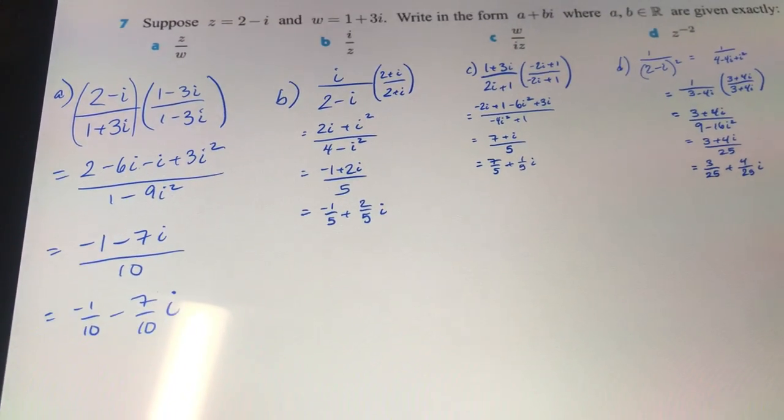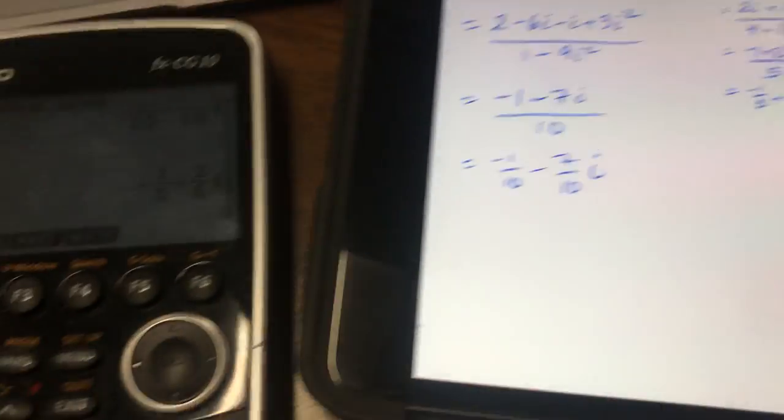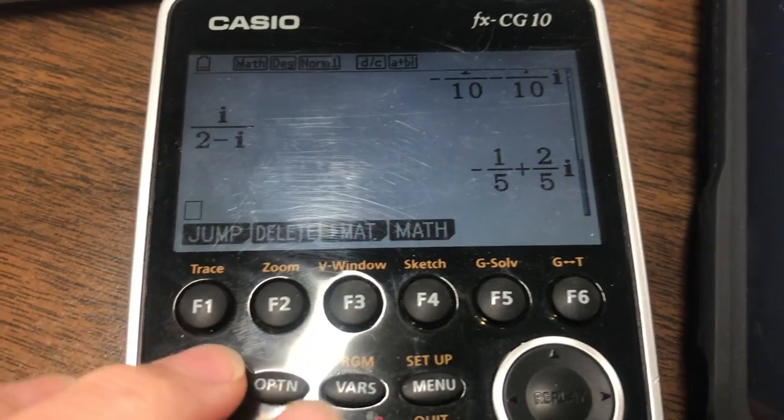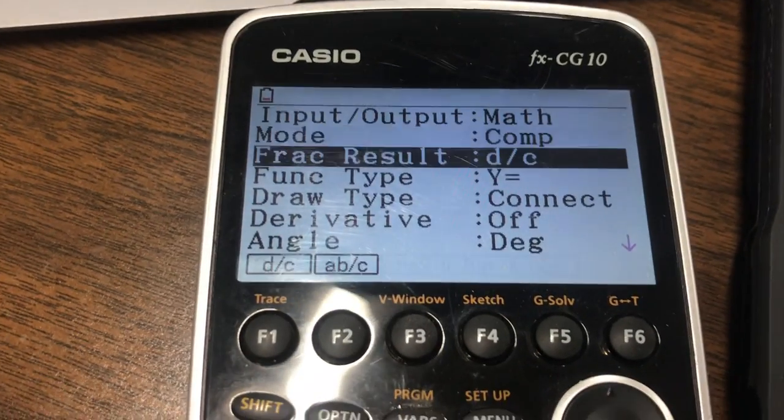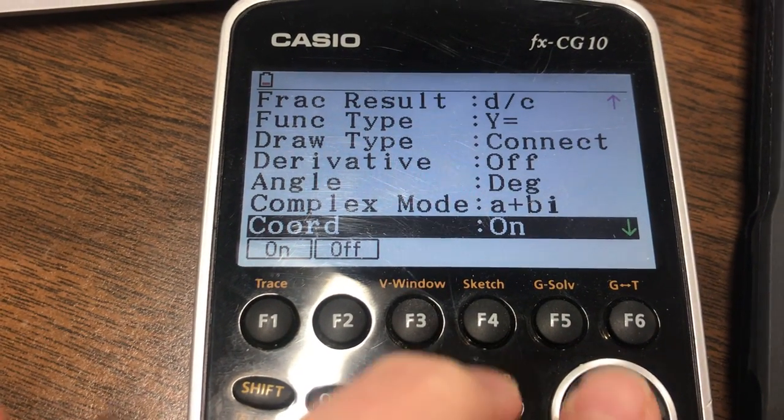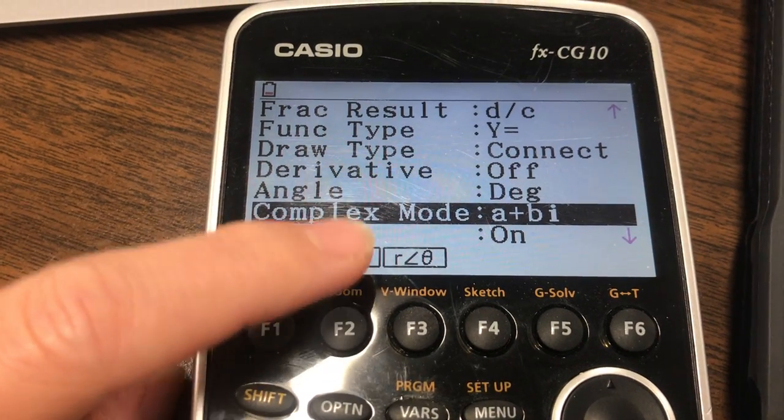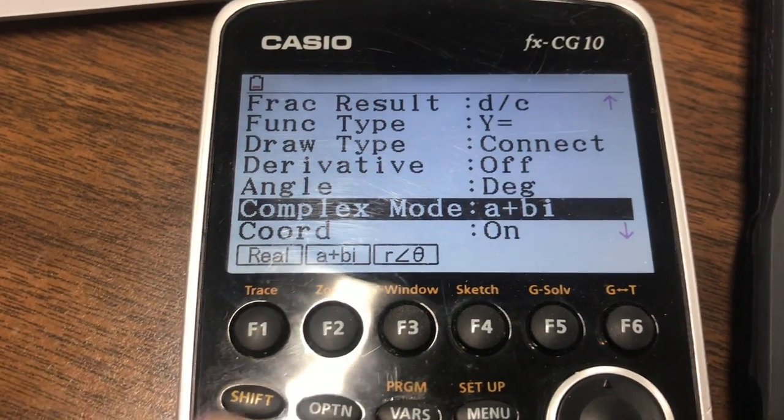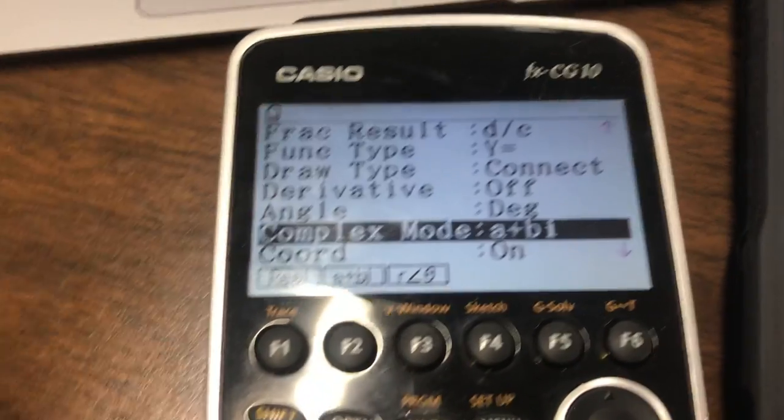But I was working these problems for HL and wanted to make sure I was right. So I came over to my calculator and I had to first change the setup and I came down here to the complex mode. And so notice my options are real or A plus B I or R less than theta. I'm not sure exactly what that one means. So I switched it to this A plus B I.